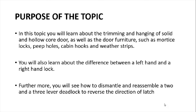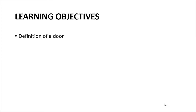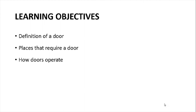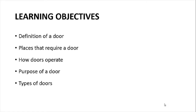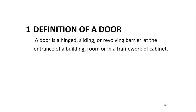Furthermore, you will see how to dismantle and reassemble a two or three lever deadlock to reverse the direction of latch. The learning objectives are: the first objective is to define what is a door; the second is places that require a door; the third is how doors operate; the fourth is the purpose of a door; the fifth is types of doors; and the sixth is fitting and hanging a door.